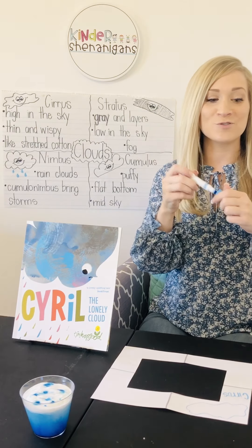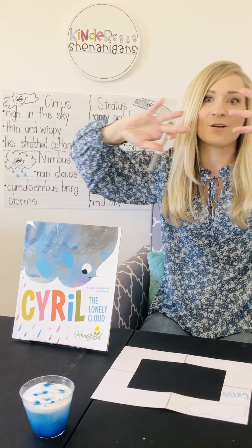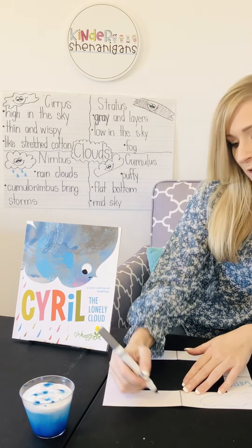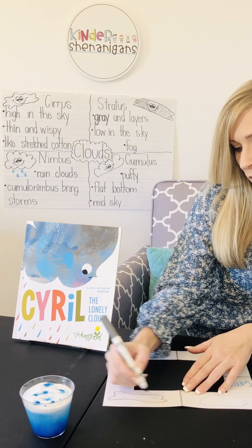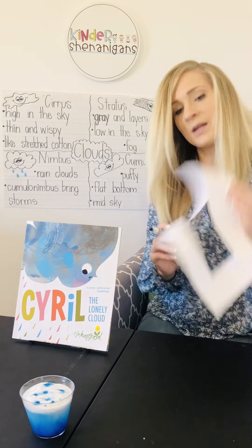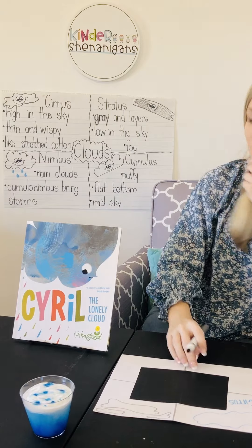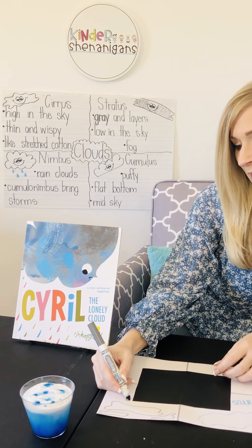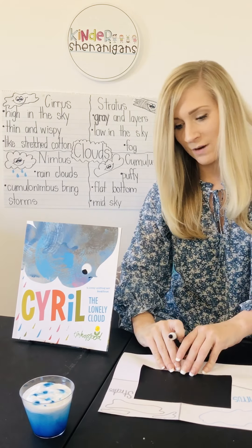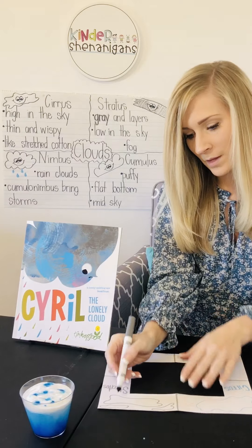Stratus clouds are kind of big waves in the sky — S-T-R-A-T-U-S, stratus. I'm going to color them in a little bit gray.